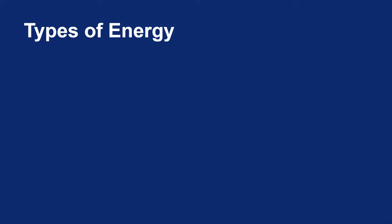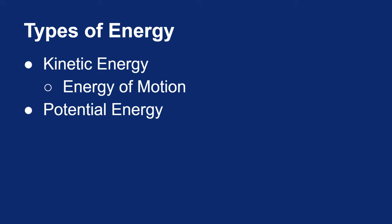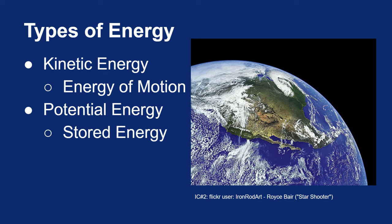In chapter 3, we talked about different types of energy. The most common categories for energy would be to consider kinetic energy, which we described as the energy of motion, and potential energy, which we described as stored energy.